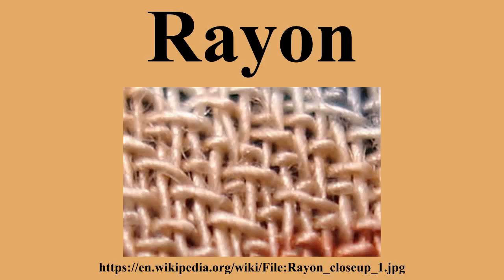Rayon is a manufactured regenerated cellulose fiber. It is made from purified cellulose, primarily from wood pulp, which is chemically converted into a soluble compound. It is then dissolved and forced through a spinneret to produce filaments which are chemically solidified, resulting in synthetic fibers of nearly pure cellulose. Because rayon is manufactured from naturally occurring polymers, it is considered a semi-synthetic fiber.